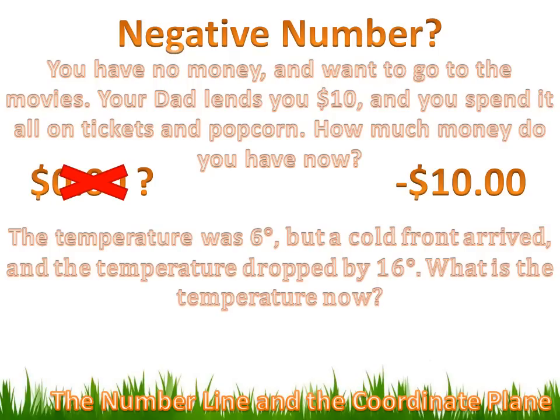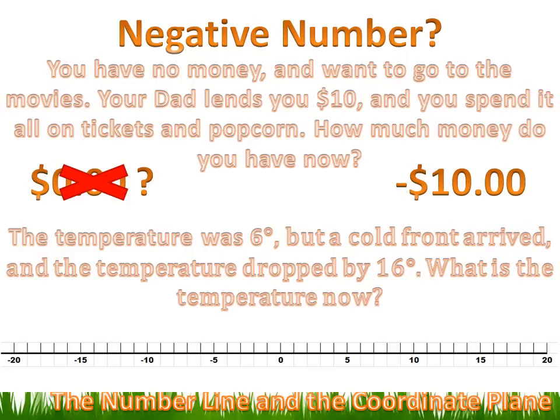Or how about this one? The temperature was 6 degrees, but a cold front arrived and the temperature dropped by 16 degrees. What's the temperature now? Let's look at this on a number line. We could plot that initial temperature of 6 degrees — go to the positive side of the number line and put a dot at 6. Now the temperature is going to drop by 16 degrees, which means we're subtracting 16 degrees and moving towards the negative numbers.